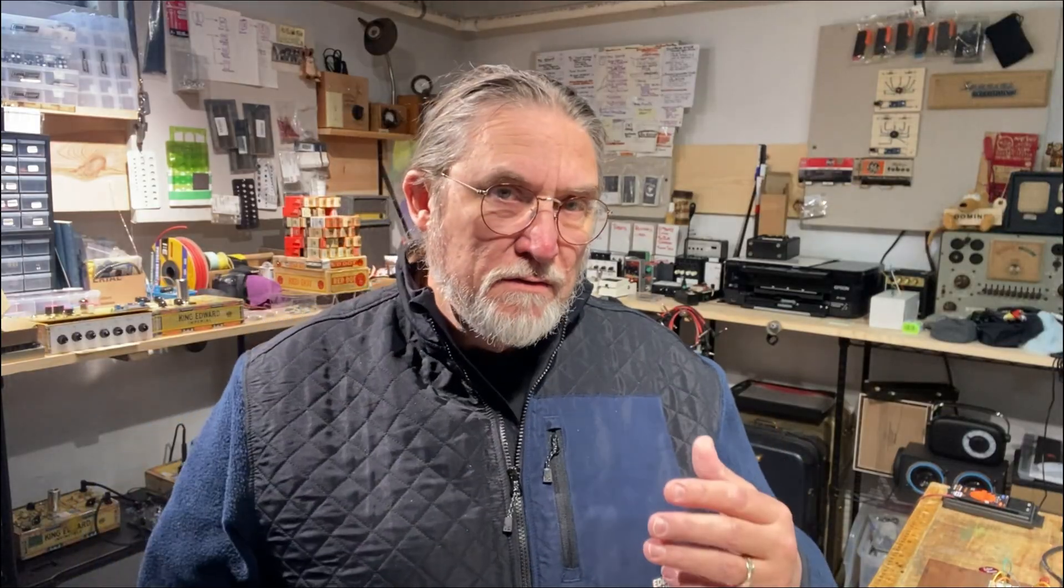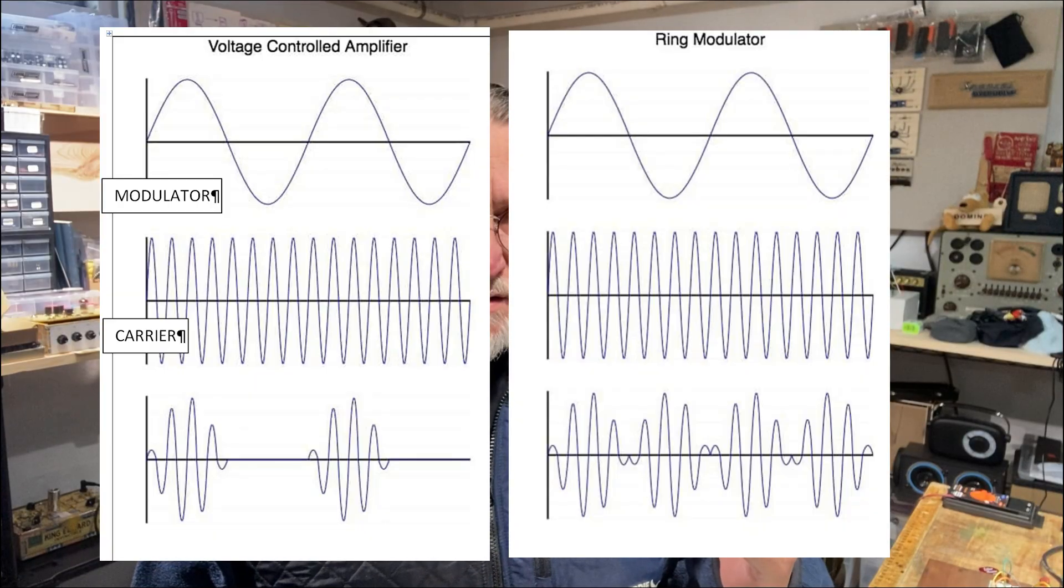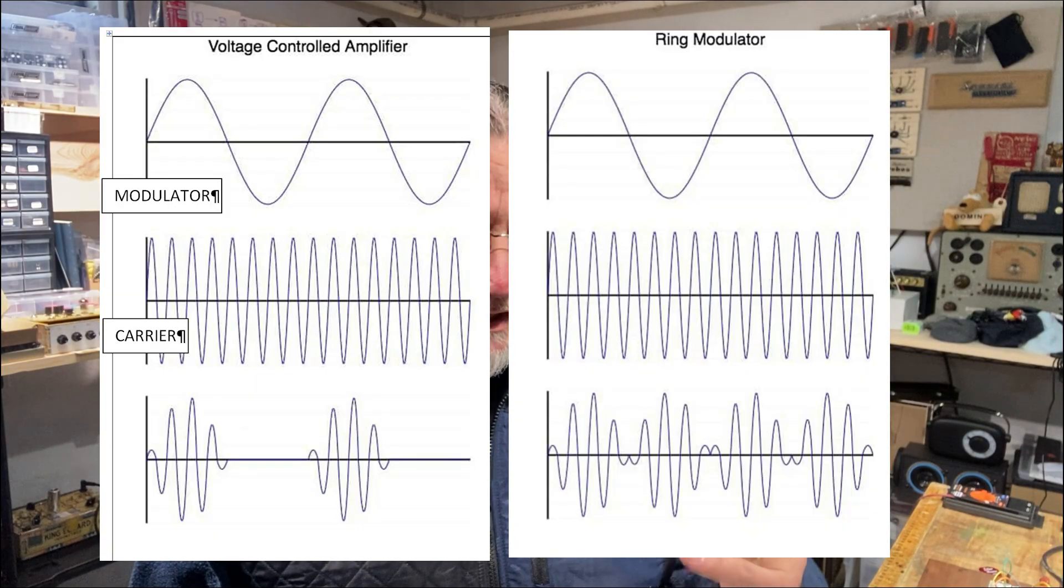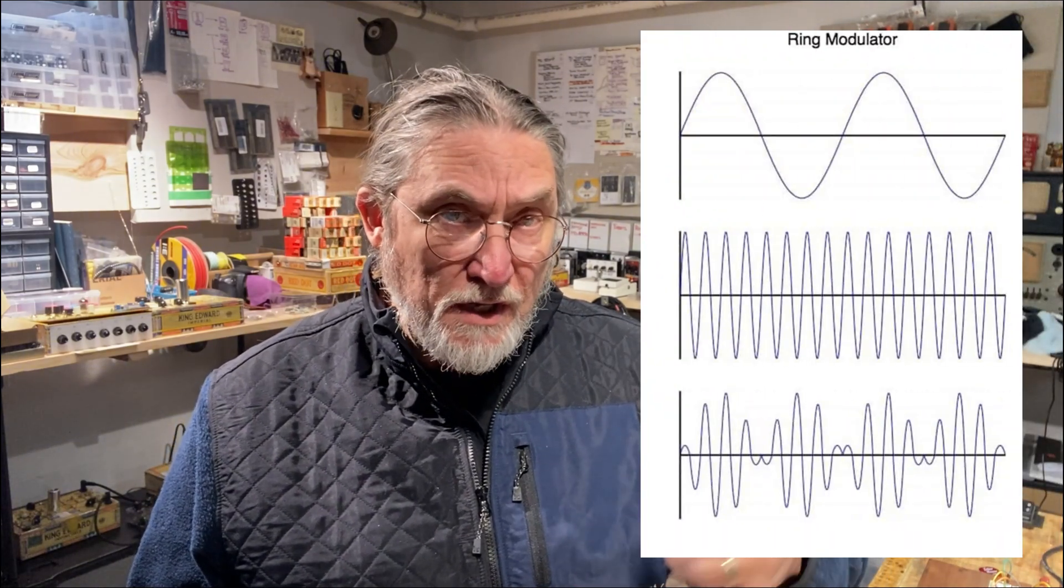Unlike the amplitude modulator, a ring modulator allows the modulator to swing both positive and negative, and for this reason it's often referred to as a four-quadrant multiplier because both the modulator and the carrier can both swing positive and negative.